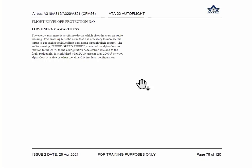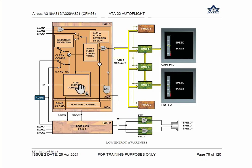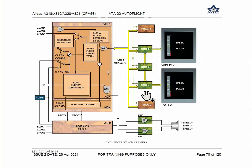This is how the system flows these warnings, which you will see on the PFD and as an audio warning. The alpha floor computation or the low energy warning — either of these two warnings — will come to the loudest speaker and announce 'speed speed speed speed.' At any one time either alpha floor or low energy warning will come, and that goes through both FWCs — the Flight Warning Computers.